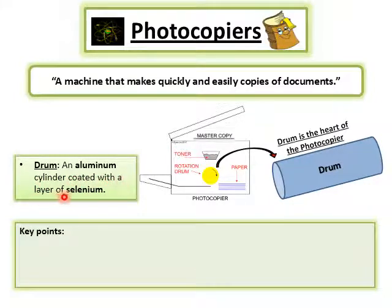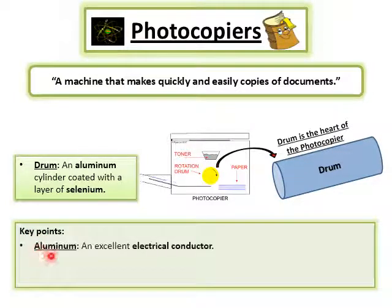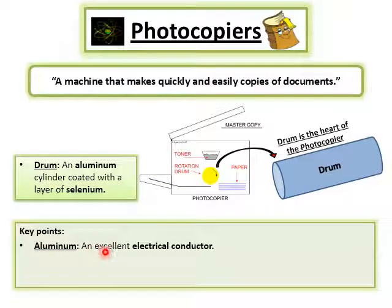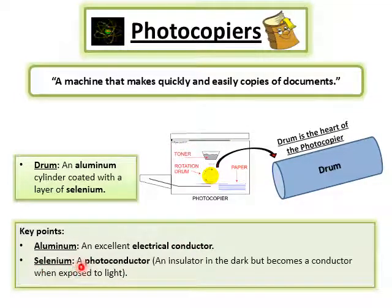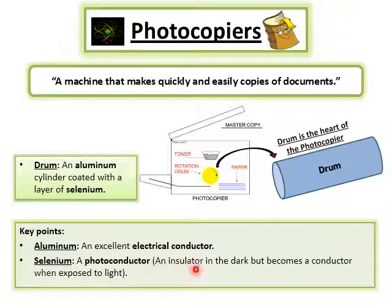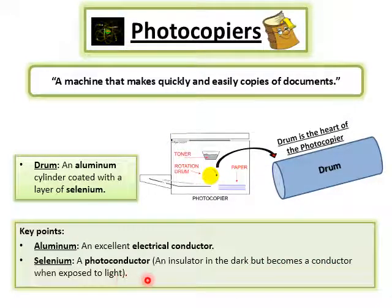The drum is an aluminium cylinder which is coated with a layer of selenium. There are two key points: first, aluminium is an excellent electrical conductor, and second, selenium is a photo conductor — meaning it is an insulator in the dark but becomes a conductor when exposed to light.